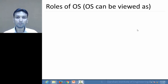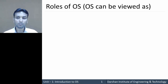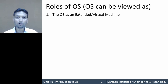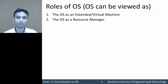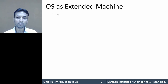Hello everyone. In this video we will learn about different roles of the operating system. The first role is operating system as an extended machine, or we can say as a virtual machine, and the second role is operating system as a resource manager. Let us see both the roles one by one, starting with operating system as an extended machine.